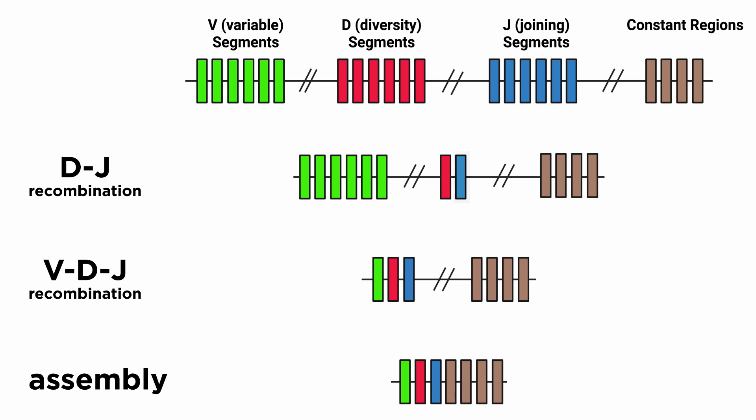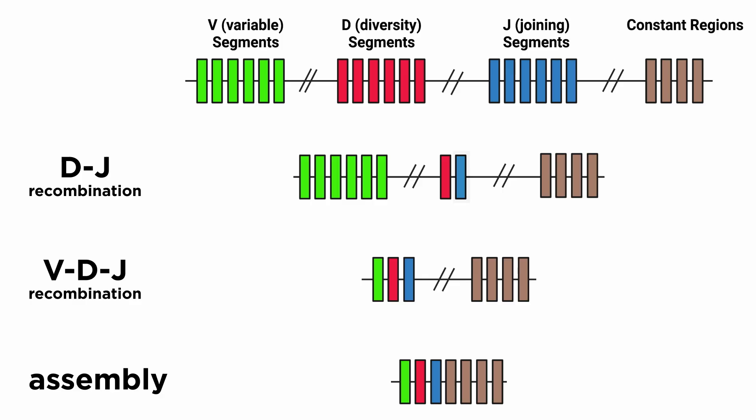Rearrangements always occur in an intentional and ordered fashion. D-to-J joining proceeds before a V segment is joined to the rearranged D-J segments. This elaborate process is the fundamental basis behind such incredible antigen-receptor diversity in mammals. One of the advantages of this process is that it does not occur in germline cells, and can result in a limitless repertoire of potential antigen-binding specificities.